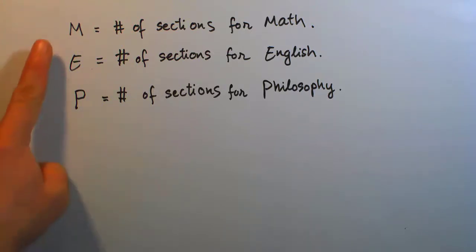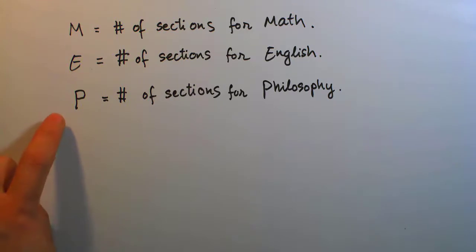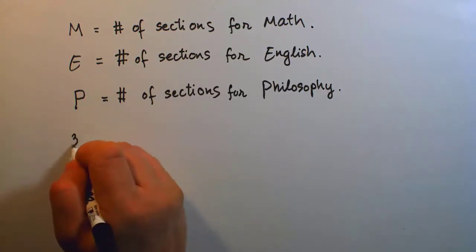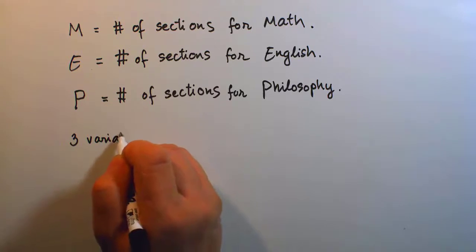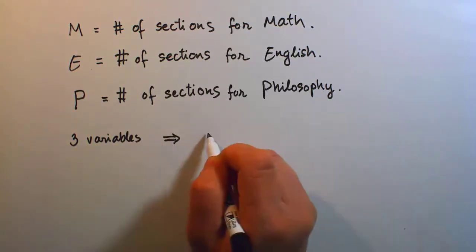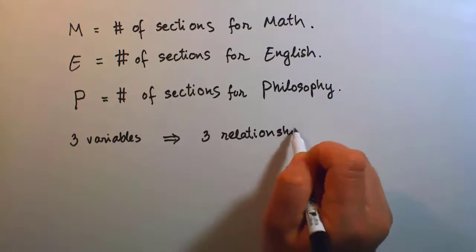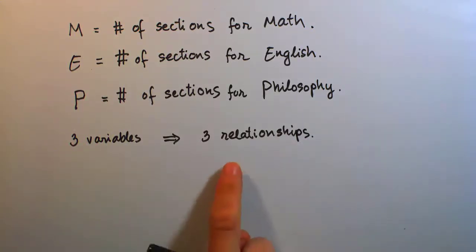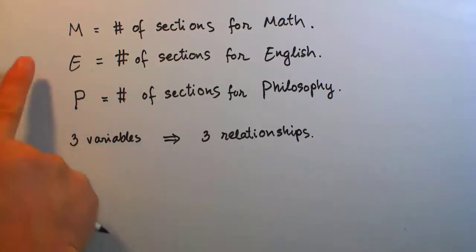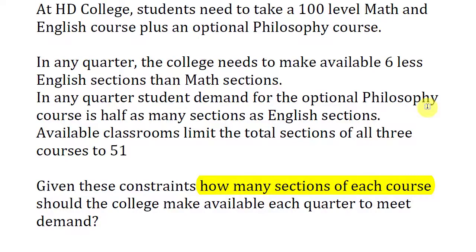Once we have identified all the variables, since we are looking at three variables, we should be able to find three relationships among them. Let's now go ahead and look for the three relationships among M, E, and P. The middle part of the problem is where it indicates all the requirements or relationships among the three variables. Let's read them one by one.